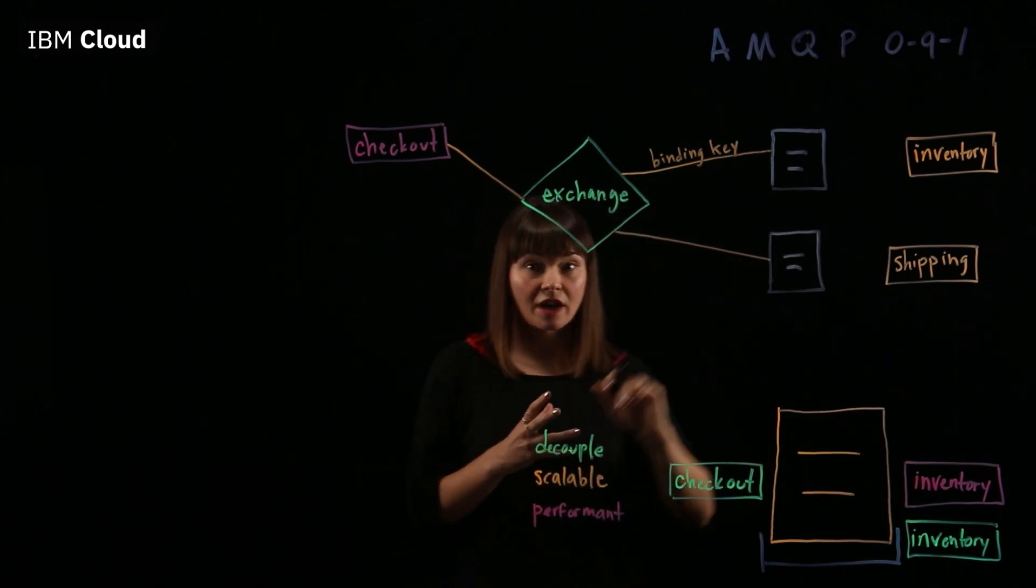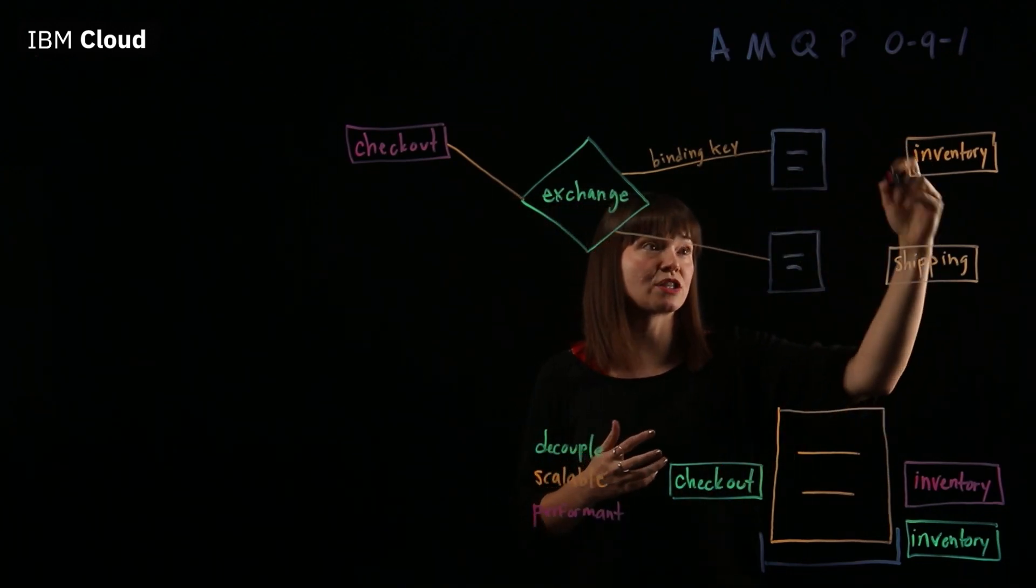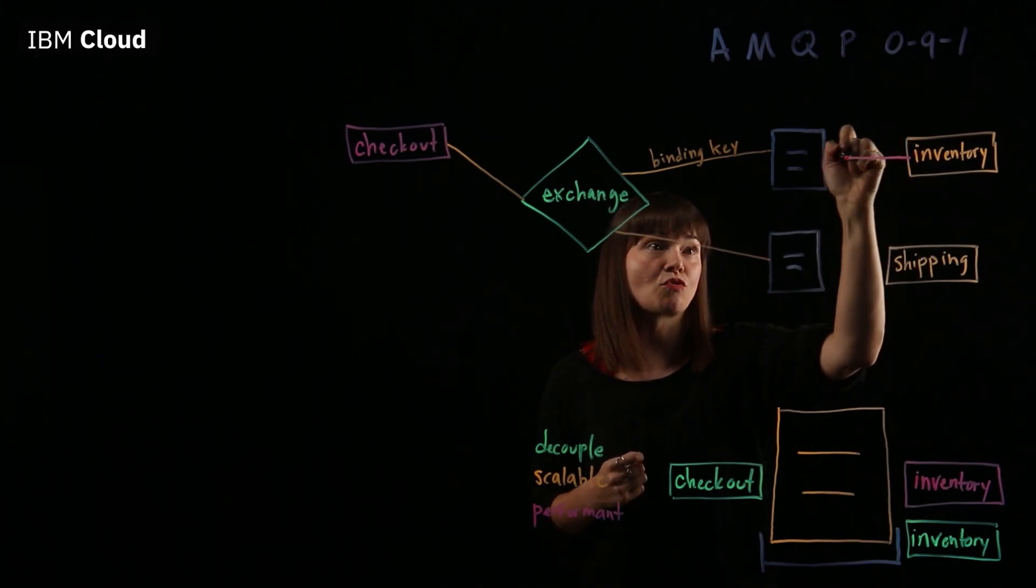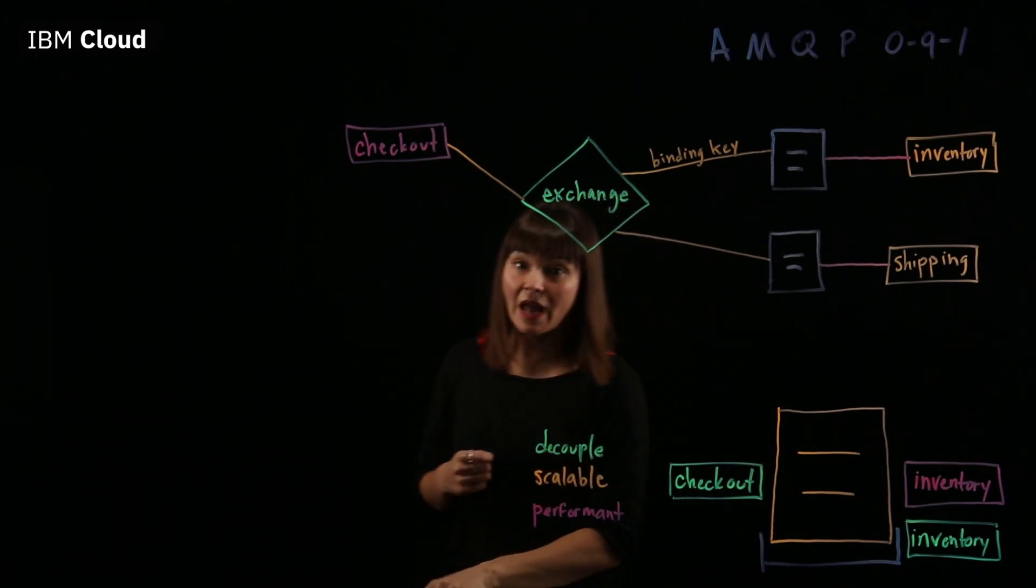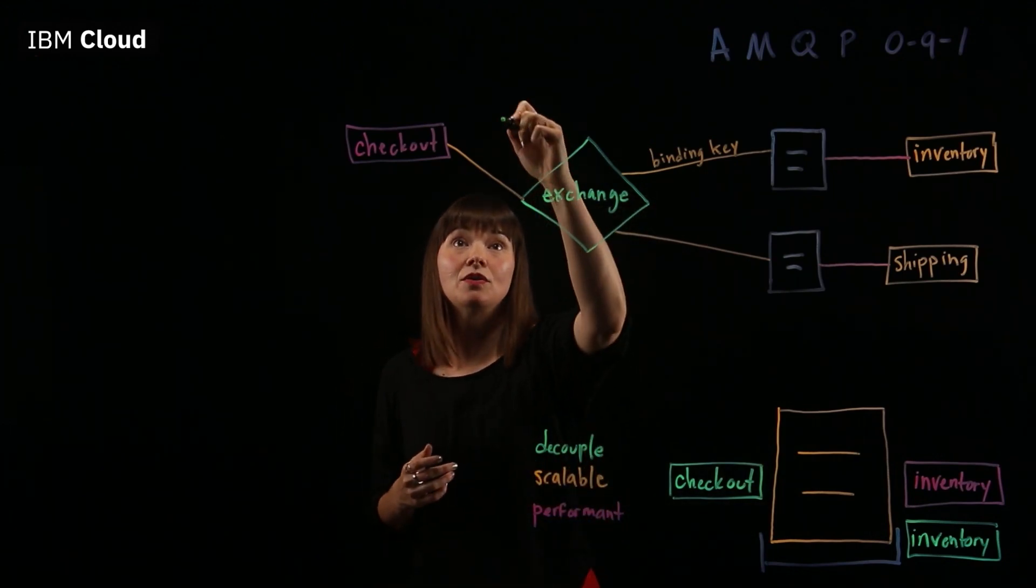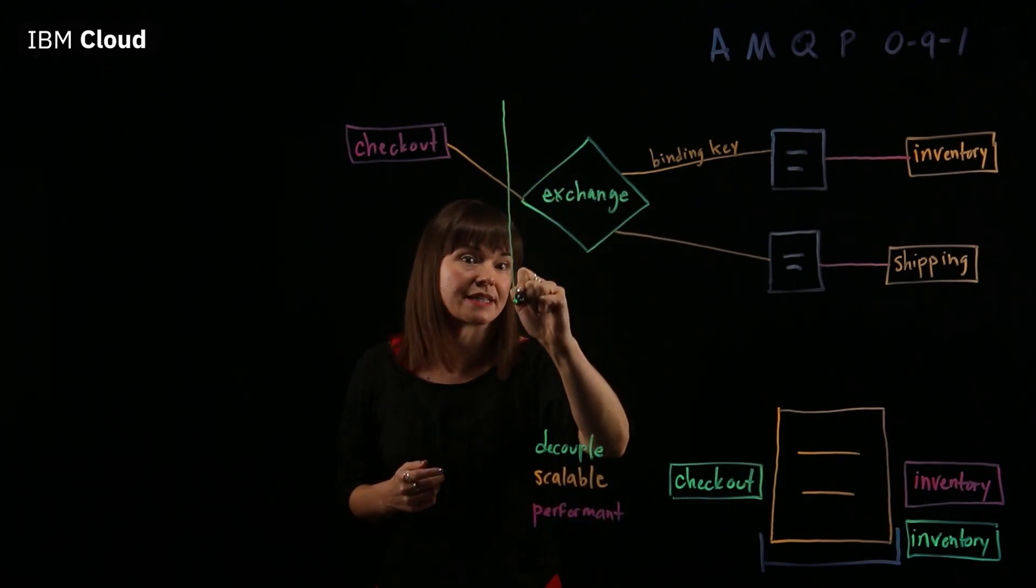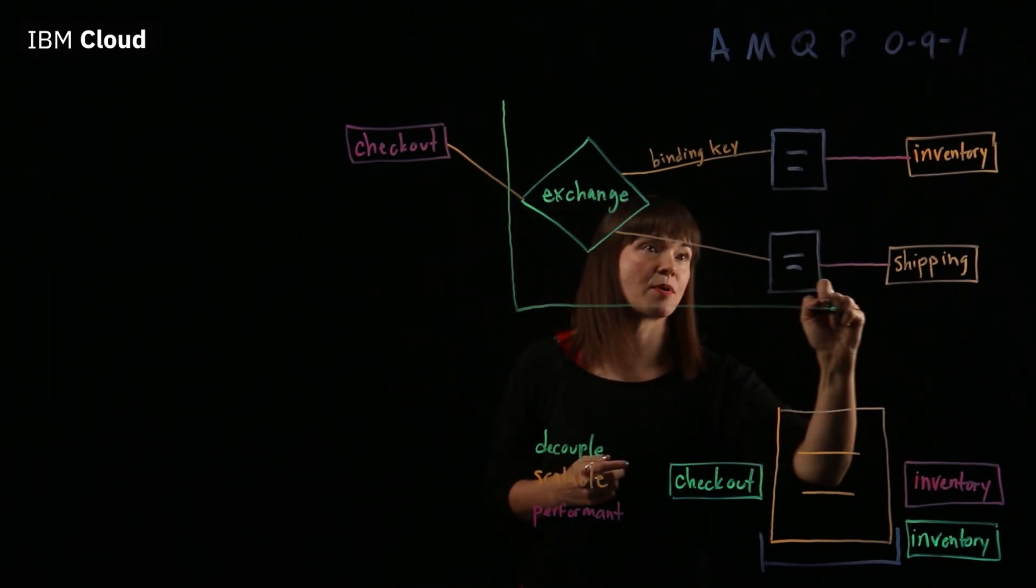And then our consuming applications or consumers, consuming services, those subscribe to the queues. So AMQP, RabbitMQ, this is the message broker here, this part of the system.